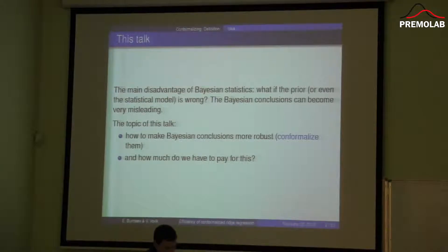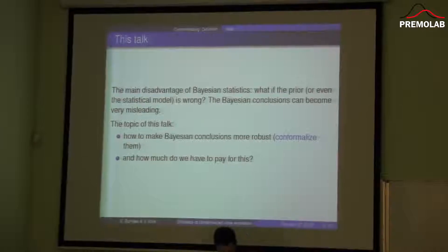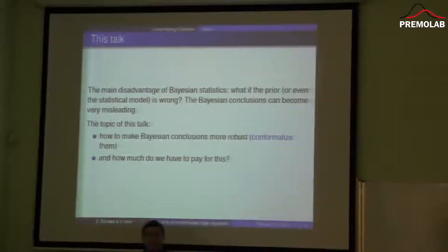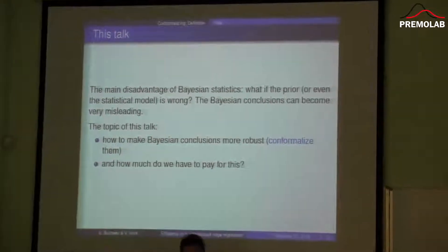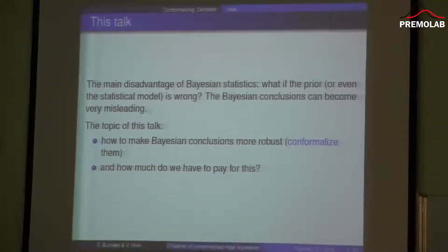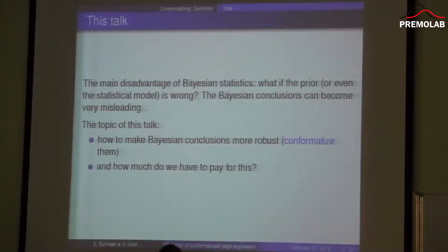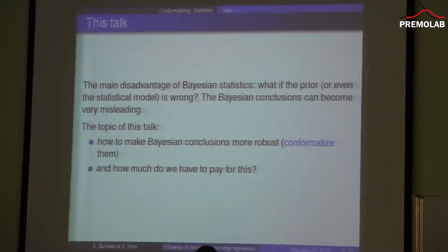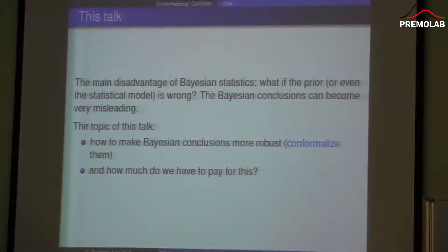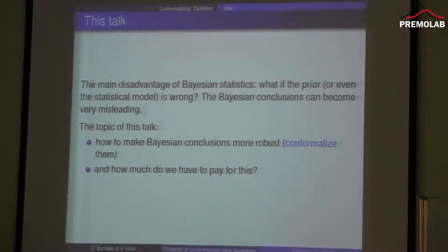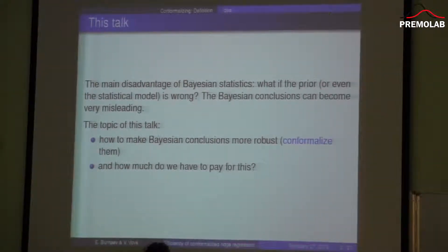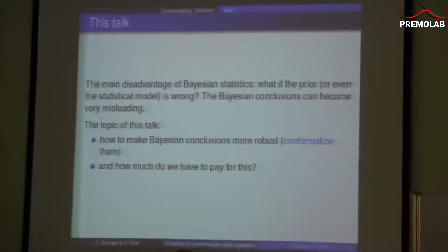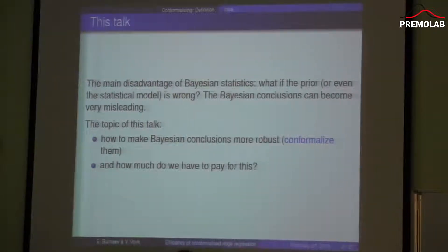Today we'll talk about efficiency of conformalized ridge regression. The main disadvantage of Bayesian statistics is that it's difficult to specify prior. And what if the prior is wrong or what if the model is wrong? The Bayesian conclusions can become very misleading.